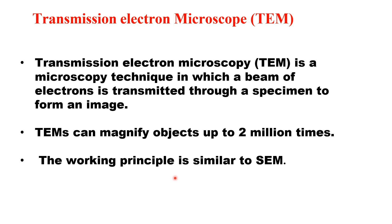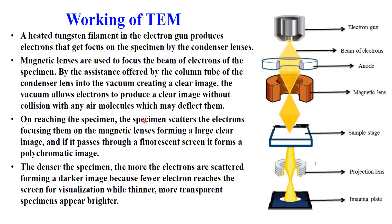The working principle is similar to SEM because here also we use electron beams. The electron gun creates the electron beam, which is focused by magnetic lenses. However, in TEM the specimen is placed in between the lenses rather than at the end, so the electron beam passes through the thin sample and is then analyzed on a fluorescent screen or digital screen.